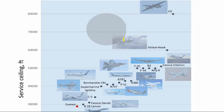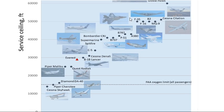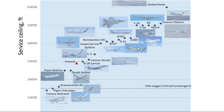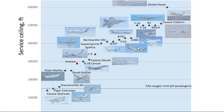Going higher still, we reach reconnaissance aircraft. At about 60,000 feet is the Global Hawk, and at 80,000 feet is the service ceiling for the U-2 — aircraft specifically designed to fly at high altitude. That's a look at the wide range of service ceilings, which depends on the amount of power available to the aircraft as well as the aircraft design, which influences the power required for steady level flight.